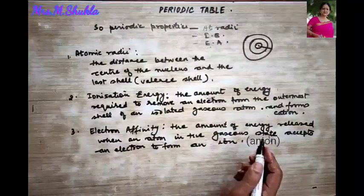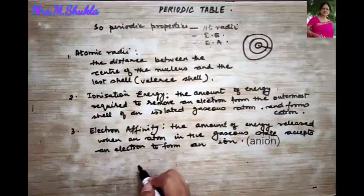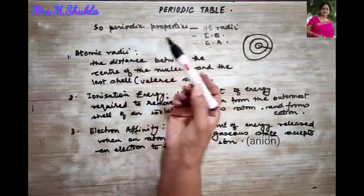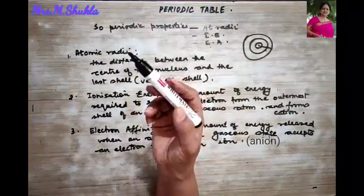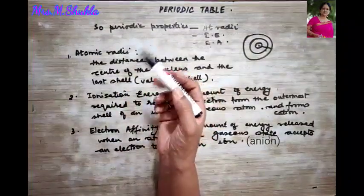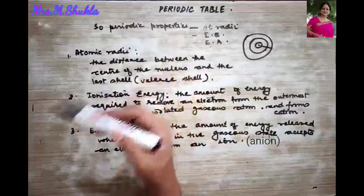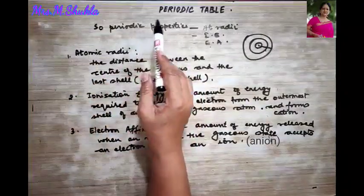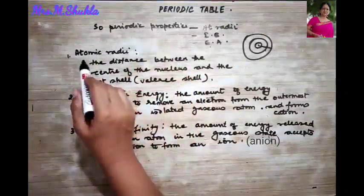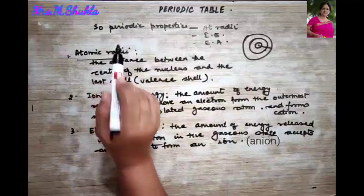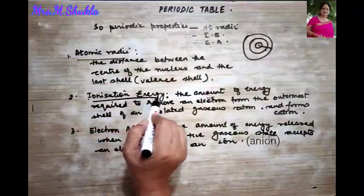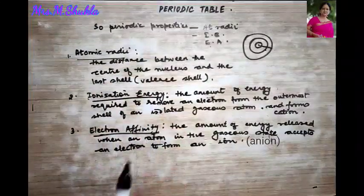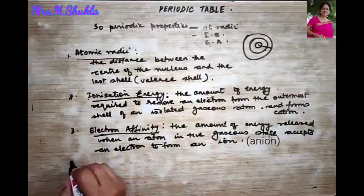So that was electron affinity. I hope you have understood some of the periodic properties. When we say periodic properties, we talk about atomic radii, ionization potential, and electron affinity.